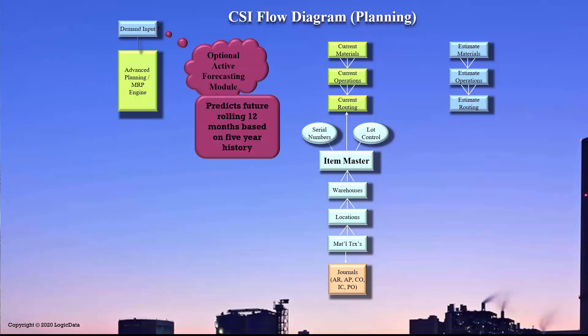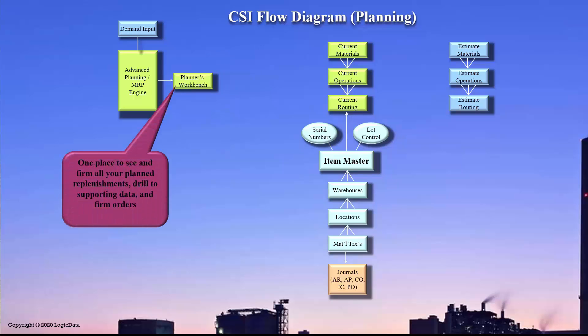Optionally, you can add on an active forecasting module that'll look at your history of up to the last five years of material usage or sales, and will predict the next 12 months of usage based on that history. All of this outputs to the planner's workbench.